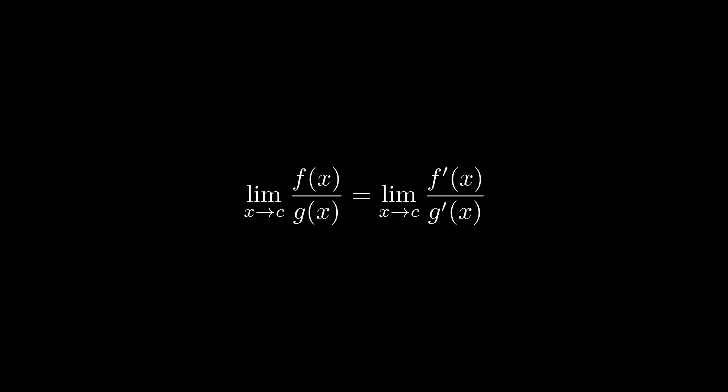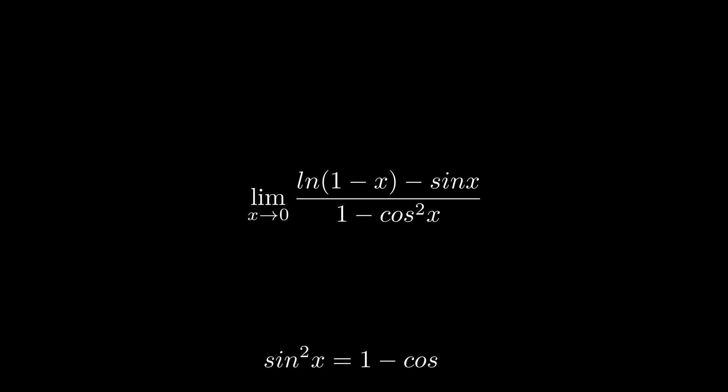So, let's go back to the problem. If we use the trig identities to substitute sine squared x for 1 minus cosine squared x, it can make the problem a bit easier. Now, if we apply L'Hopital's rule, the derivative of ln 1 minus x is equal to negative 1 over 1 minus x, the derivative of sine x is equal to cosine x, and the derivative of sine squared x is equal to 2 sine x cosine x.